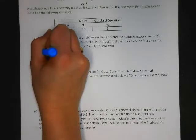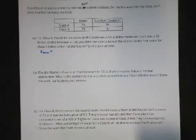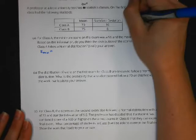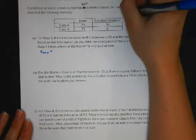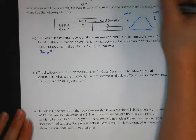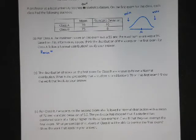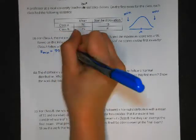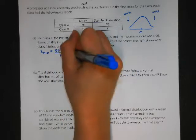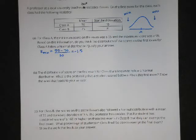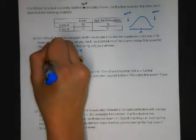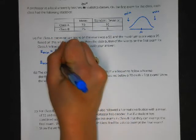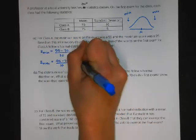If we do have a normal distribution, then the minimum should be here and the maximum should be up here with the mean here in the middle. The minimum z-score is 55 minus 70 all over 10, which gives me negative 2.5. The z-score for the max is 95 minus 70 all over 10, which gives me 2.5.